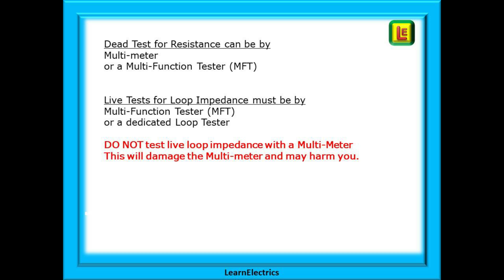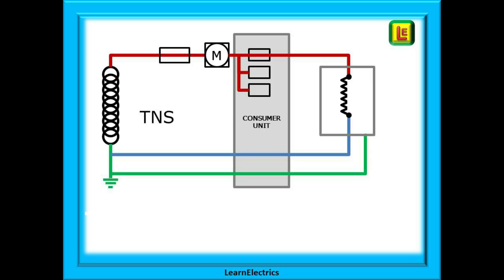We can begin with the reminder of the three types of earthing system in popular use. This system shown here is TNS. The earth and neutral are in separate conductors throughout the whole system. There is the more modern TNCS system where the earth and neutral are combined in the same cable up to the property and at the point of entry to the building they are separated into an earth and a neutral conductor.